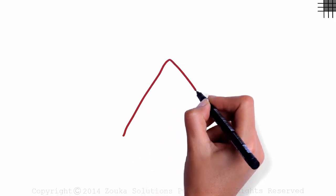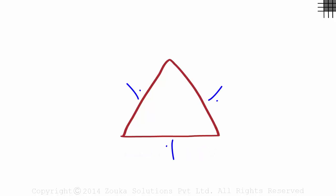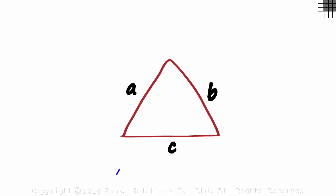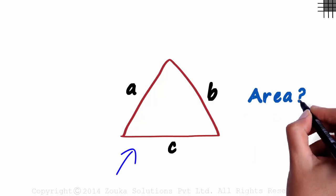You can easily find the area of a triangle when given its base and height. But what if we are only given the lengths of its sides — let's say A, B, and C? How do we find the area of this triangle?